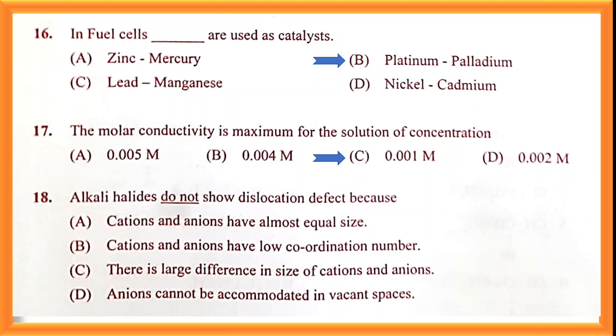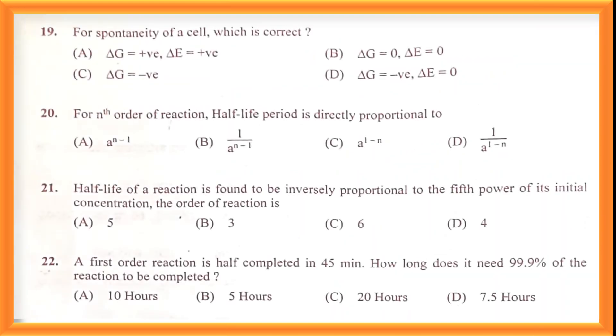Question number eighteen: alkali halides do not show dislocation defects because cations and anions have almost equal size. Option A is the correct answer. Question number nineteen: spontaneity of the cell — which is correct?